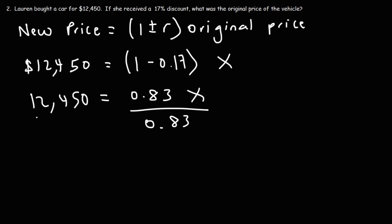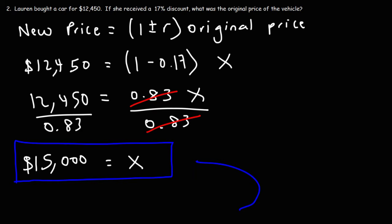But now to get the answer, we're going to divide both sides by 0.83. 12,450 divided by 0.83, that's equal to 15,000. So this is the original price of the vehicle before the discount was applied.